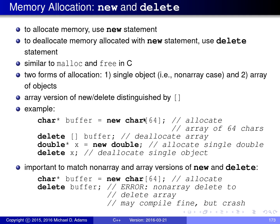For example, to allocate an array of 64 characters, we use the array new statement with square brackets: new char[64]. This allocates space for 64 characters and returns a pointer to that chunk of memory, which we store into a character pointer variable called buffer. To free this memory, we use the array delete with square brackets: delete[] buffer. This deallocates the memory that was allocated with new.